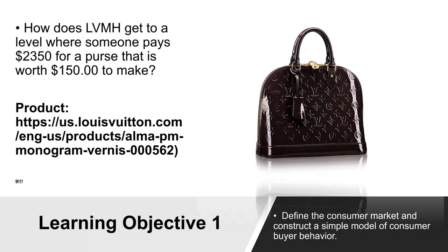Today we're going to go over another product of Louis Vuitton. Louis Vuitton is a great product — customers love them and they survive even the craziest of economic downturns. So why do people purchase Louis Vuitton products, especially a purse that could potentially cost $150 to make but they'll pay up to $2,350 for it? This is called the Louis Vuitton Alma PM Monogram Vernis bag — a patent leather bag with the Louis Vuitton monogrammed into it. Only when you turn it can you actually see the monogram.